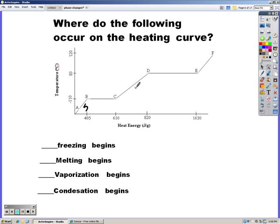So freezing is between solid and liquid. We're going to go liquid to solid, and so it begins at point C because you're liquid and then you start to solidify. Melting goes from solid to liquid, so we want to be solid and then all of a sudden at point B it starts to melt. Vaporization is liquid to gas, so at point D it begins. And condensation, gas to liquid, must begin at point E.